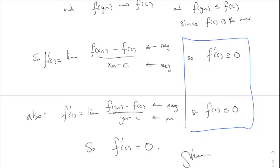This is the theorem that all calculus students know about: the derivative is zero at a relative extreme point, either a minimum or a maximum. We proved it for a maximum; you can do the whole proof the same way for a minimum.